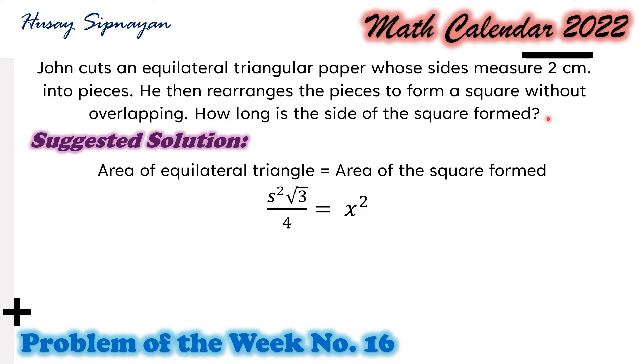Substituting s equals 2 to the formula of the area for equilateral triangle, we have 2 squared square root of 3 over 4 equals x squared. 2 squared is equal to 4. Then we have 4 over 4 that is equal to 1. So we have x squared equals square root of 3.